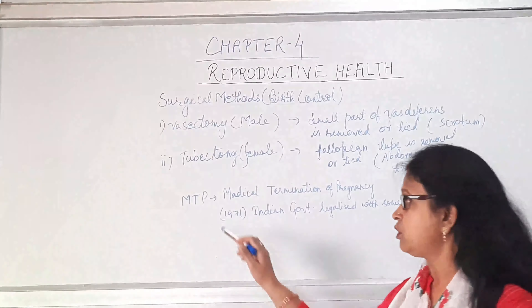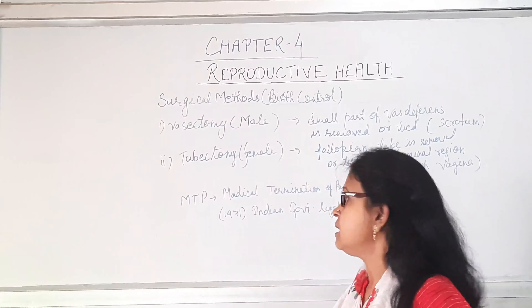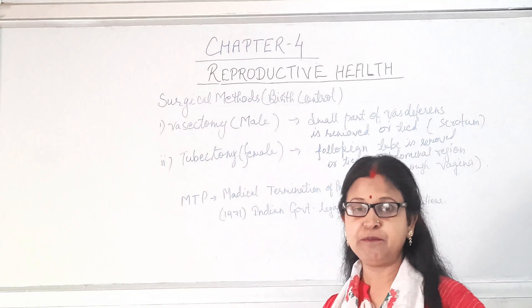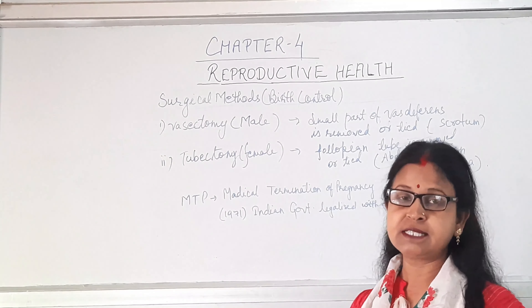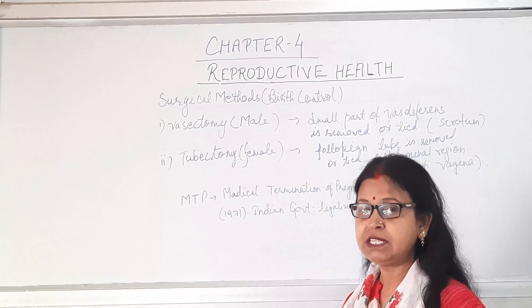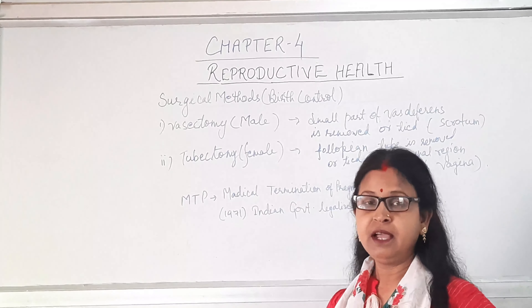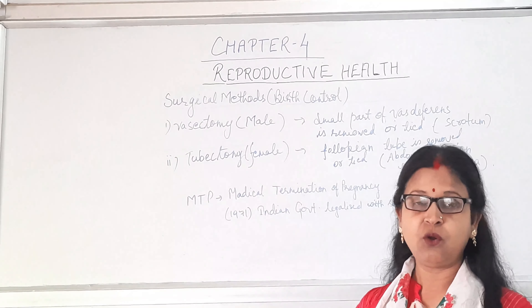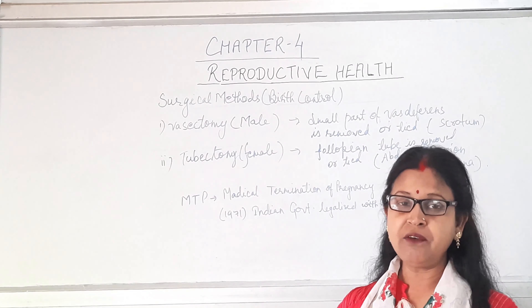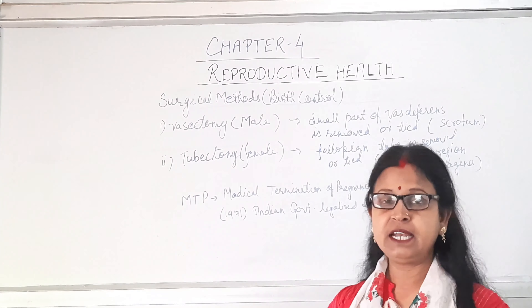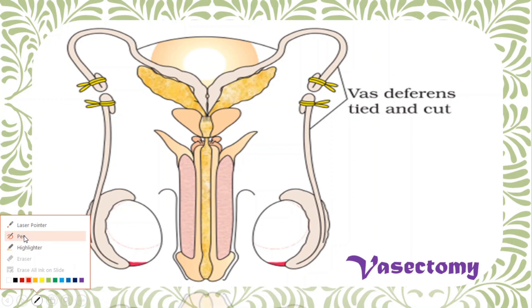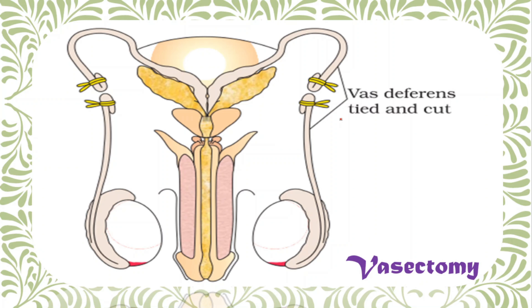Another important topic is MTP — Medical Termination of Pregnancy. In 1971, the Indian government legalized MTP under special circumstances where continuing the pregnancy is dangerous for the mother or the fetus. However, nowadays it is being misused along with amniocentesis, resulting in female feticide. For permanent population control, vasectomy and tubectomy are the two surgical methods used in males and females respectively.